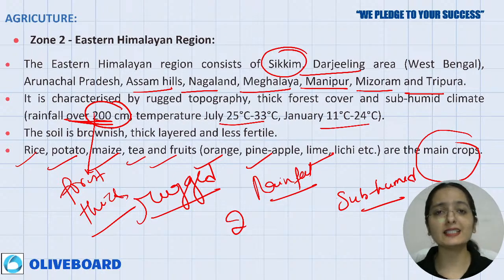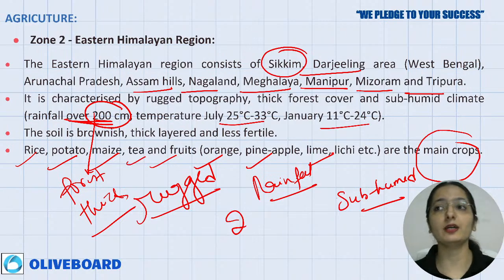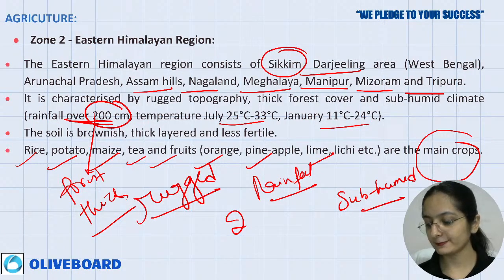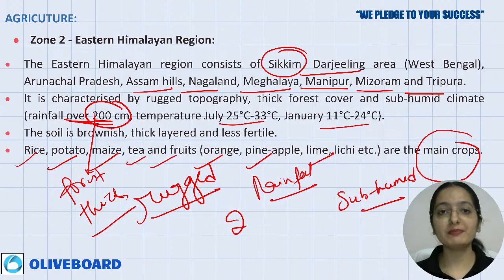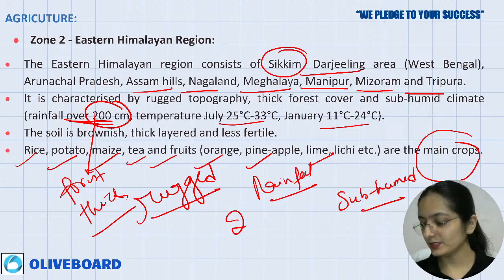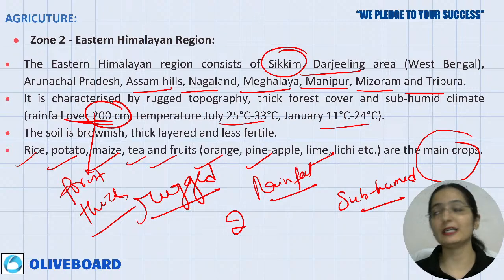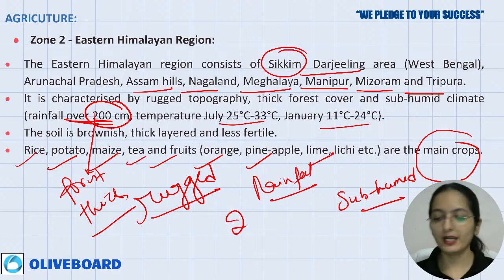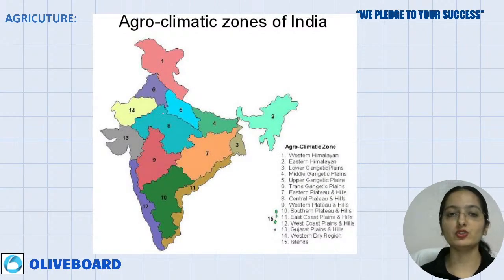These concepts are straightforward — no rocket science. It is just about your interest and seriousness. If you want to clear NABARD, you will find these things easy. There is also a paid course on the Olive Board platform covering the ARD section and current affairs.